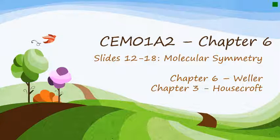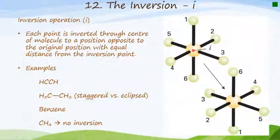Welcome to the second part of Unit 6, where we're going to look at the remaining two symmetry operators. The first one is called the inversion operation. It is given the symbol I, and what we need to look for is that the molecule must have a center of symmetry. Each point will be inverted through the center of the molecule to a position opposite to the original position, with equal distance from the inversion point.